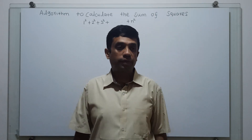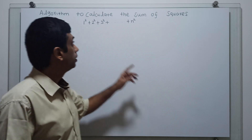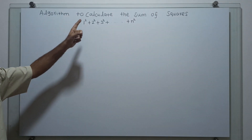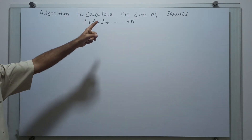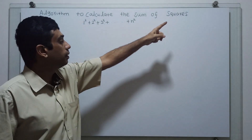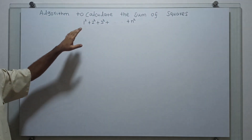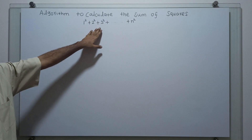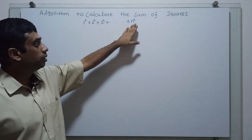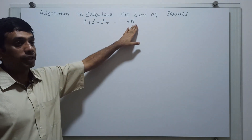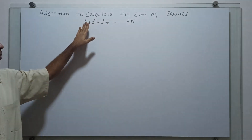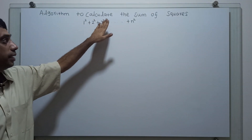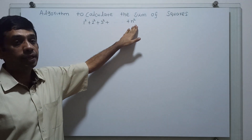Hello friends, we are going to write an algorithm to calculate the sum of squares — that means 1 square, 2 square, 3 square up to n square. So we are computing 1 square plus 2 square plus 3 square up to n square.